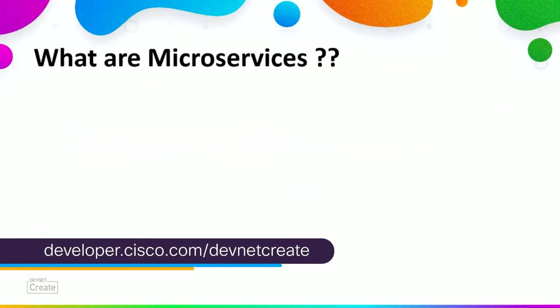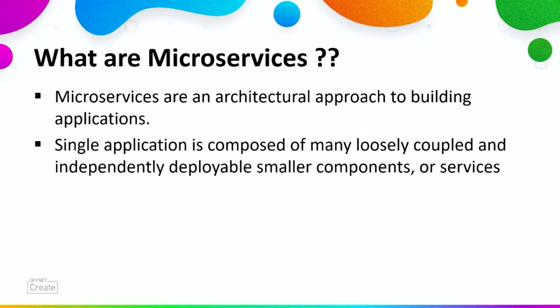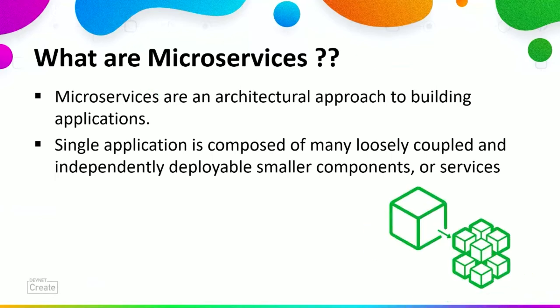Microservices are an architectural approach to building applications — a single application composed of many loosely coupled and independently deployable smaller components or services. Each service typically has its own application stack, inclusive of database and data management model, and communicates with others over REST APIs, event streaming, and message brokers. Let's look into an example microservice architecture: the Bookinfo application.